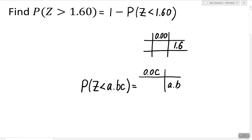If we look for the row 1.6 and the column 0.0, we'll find the number 0.9452 written in there. So that means the probability of z being less than 1.6 is 0.9452.